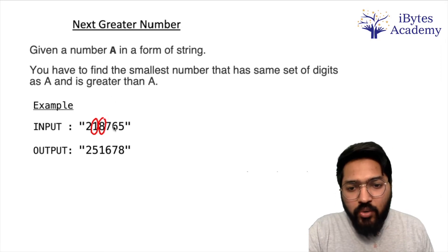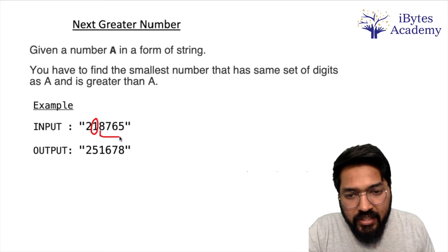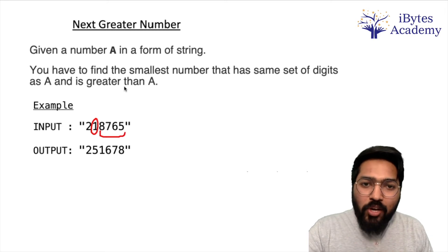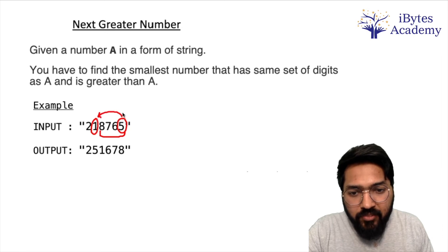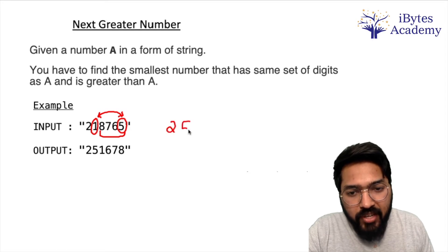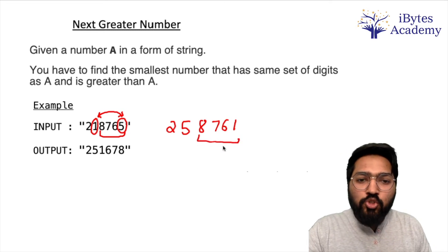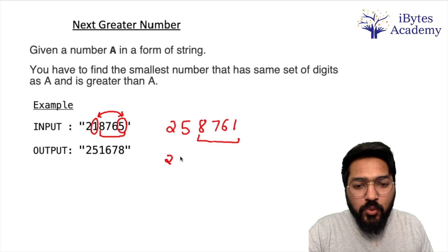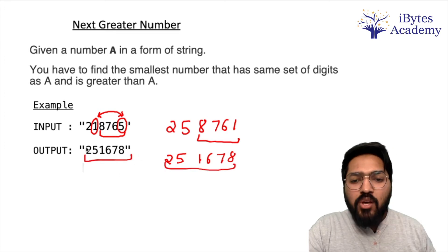Now what we are going to do is find the smallest number in the remaining digits towards the right, that is five, and swap these two. Okay, so it is going to give me two five eight seven six one. And the last step is to sort all these numbers. So that is going to be two five one six seven eight. So this is going to be my output as you can see over here.